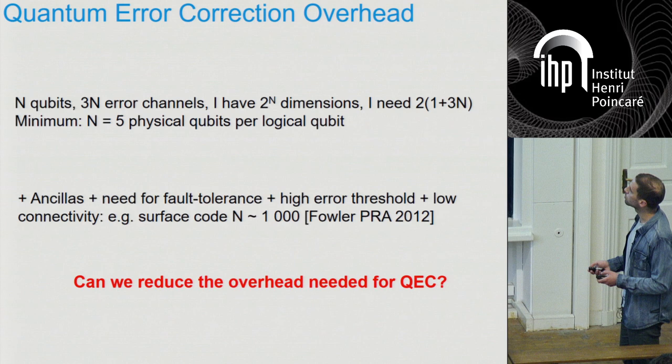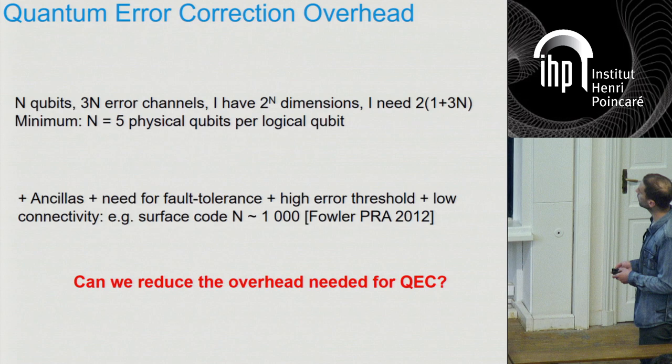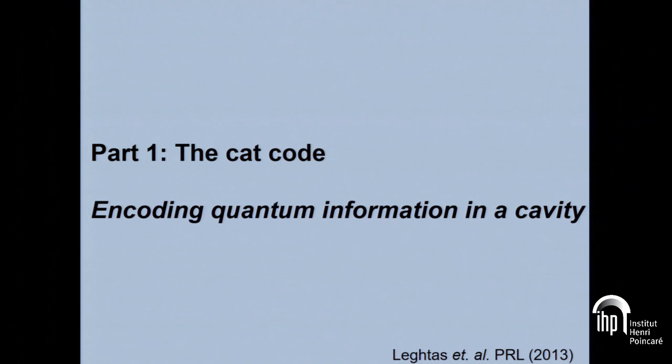So what we're trying to do in this research is ask whether we can reduce the overhead needed for error correction — by overhead I mean the number of physical qubits per logical qubit. I want to get through two ideas: the first is what we call the cat code, which is about encoding quantum information in a cavity rather than in qubits, and then I'm going to talk about a second notion, which is nonlinear dissipation.